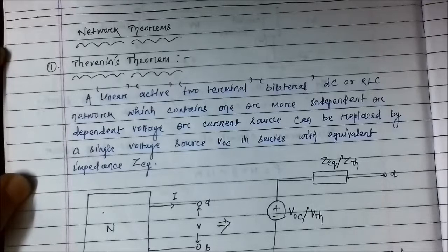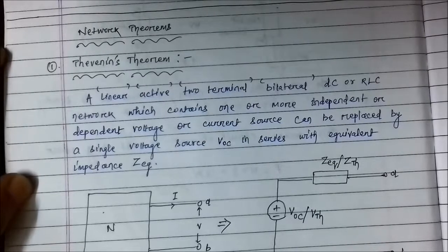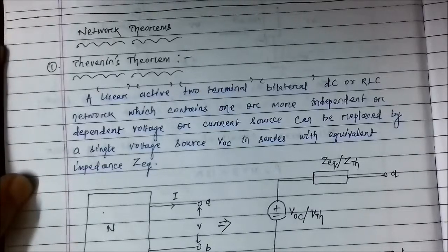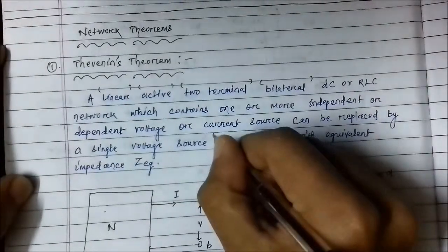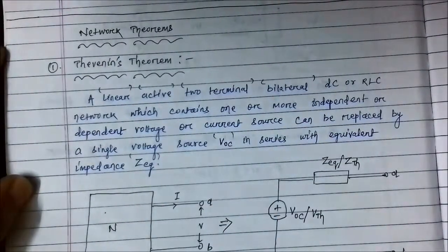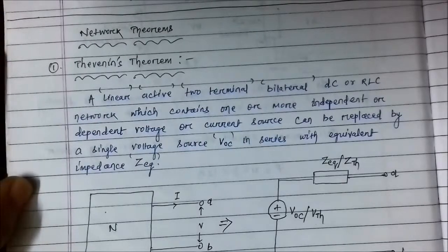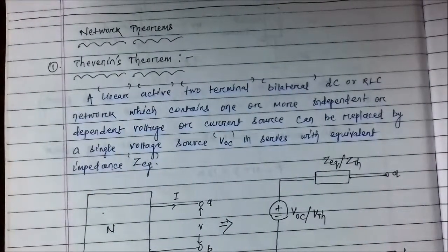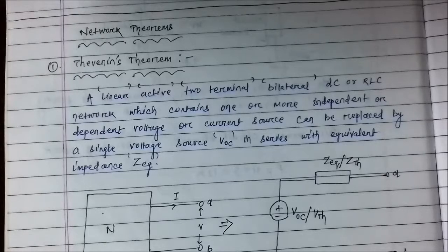Thevenin's theorem states that a linear, active, two-terminal, bilateral DC network which contains one or more independent or dependent voltage or current sources can be replaced by a single voltage source VOC in series with an equivalent impedance Z equivalent. A linear element is one which obeys Ohm's law and the principle of superposition and homogeneity. Active means it is self-generating.